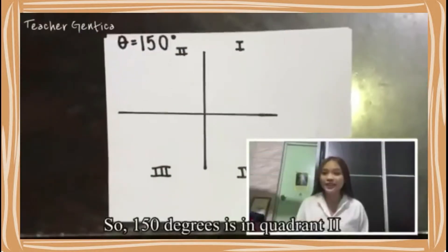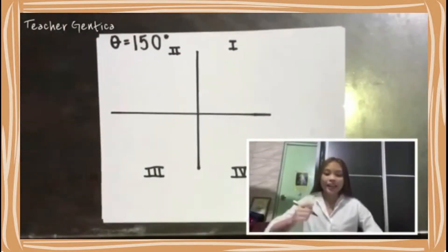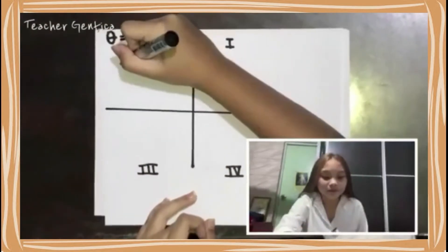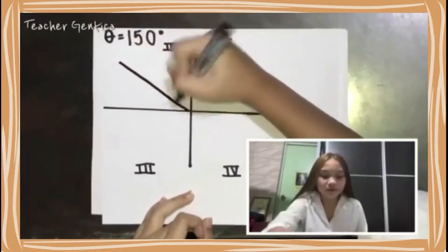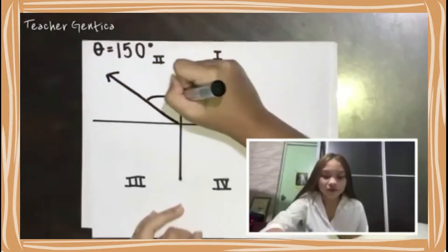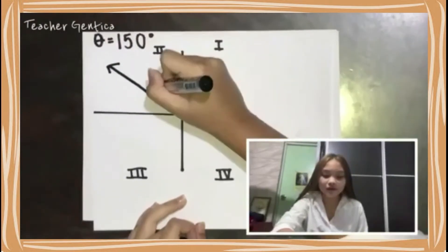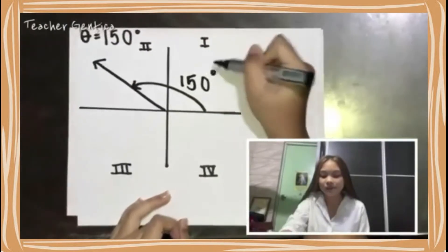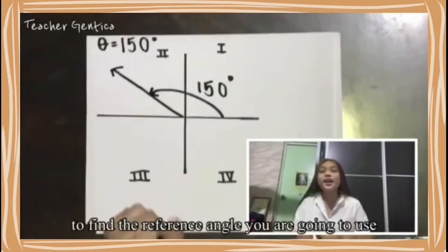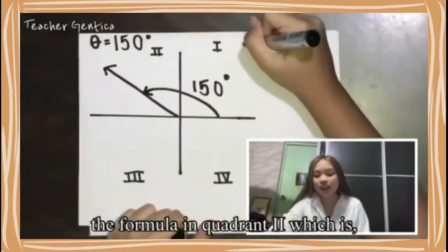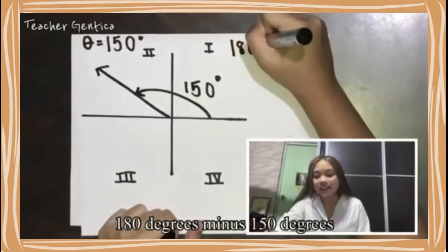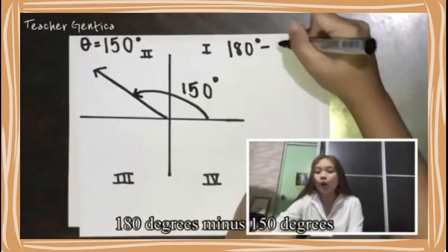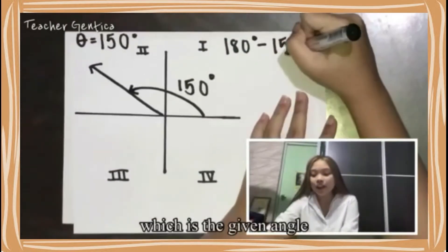Example 1: Find the reference angle of 150 degrees. 150 degrees is in quadrant 2, here. This is 150. To find the reference angle, you're going to use the formula in quadrant 2, which is 180 degrees minus 150, which is the given angle.